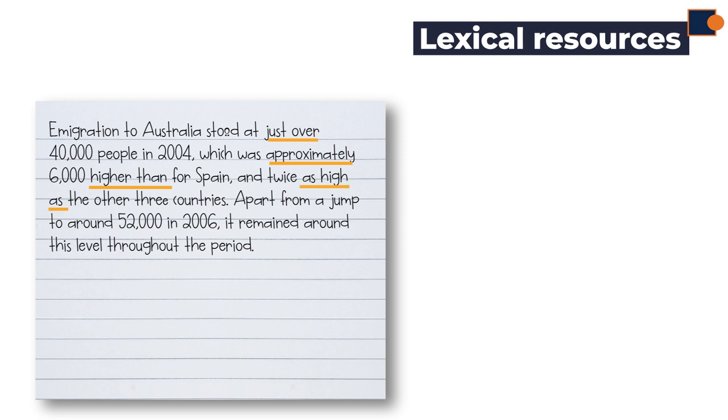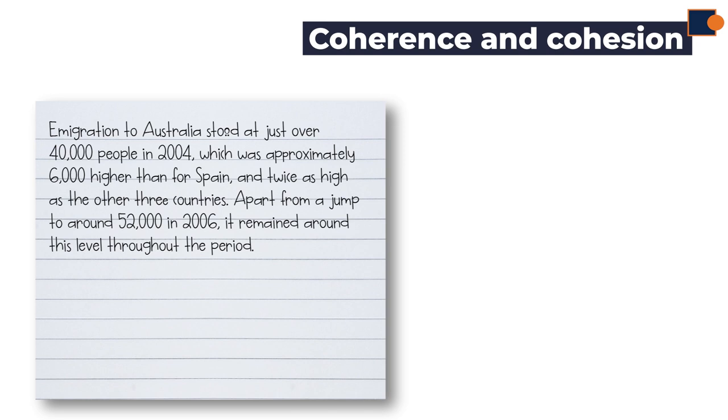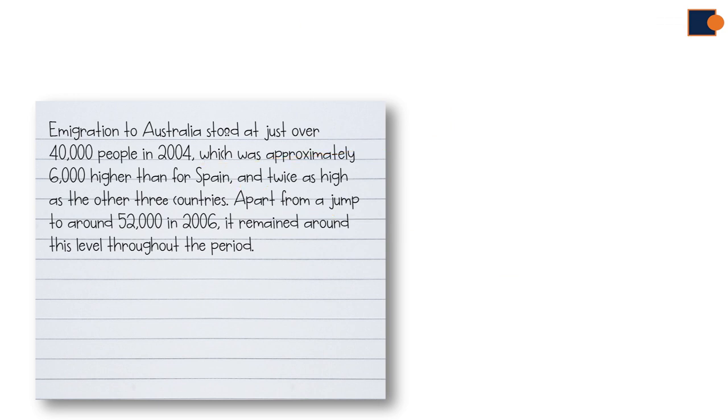In terms of coherence and cohesion criteria, all sentences are well connected using linking words such as which and apart from, and they're all applied coherently. Which here is used to give extra comment. Apart from is used to connect an idea which is an exception.